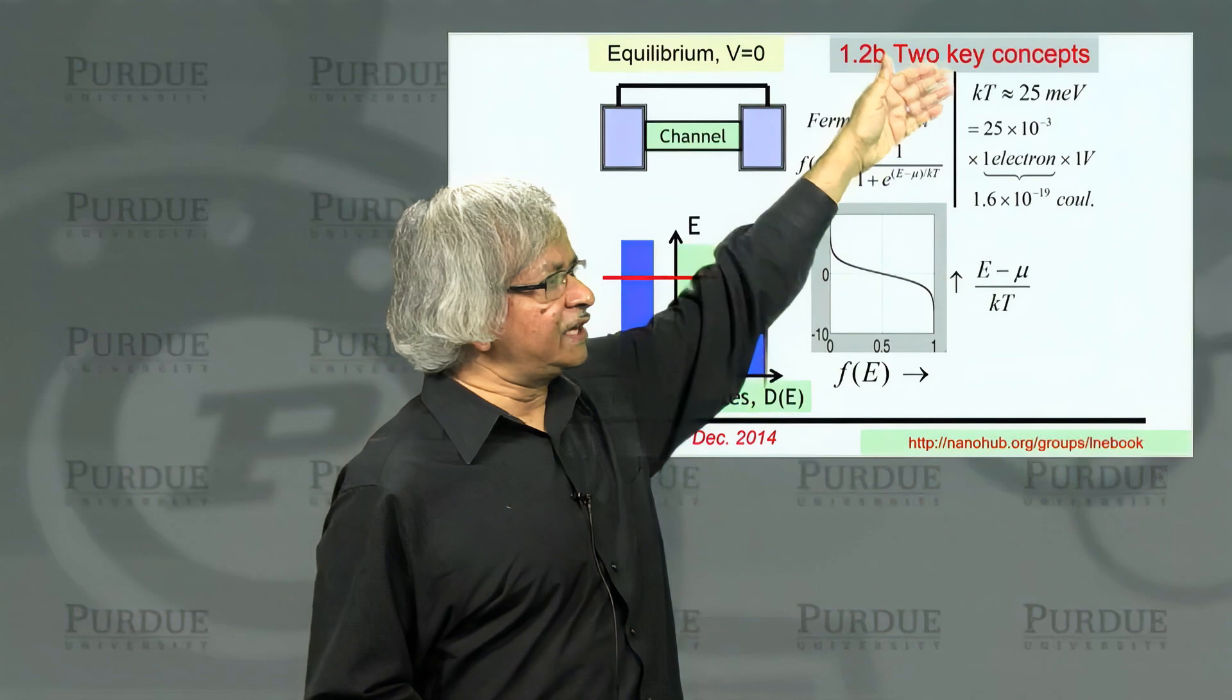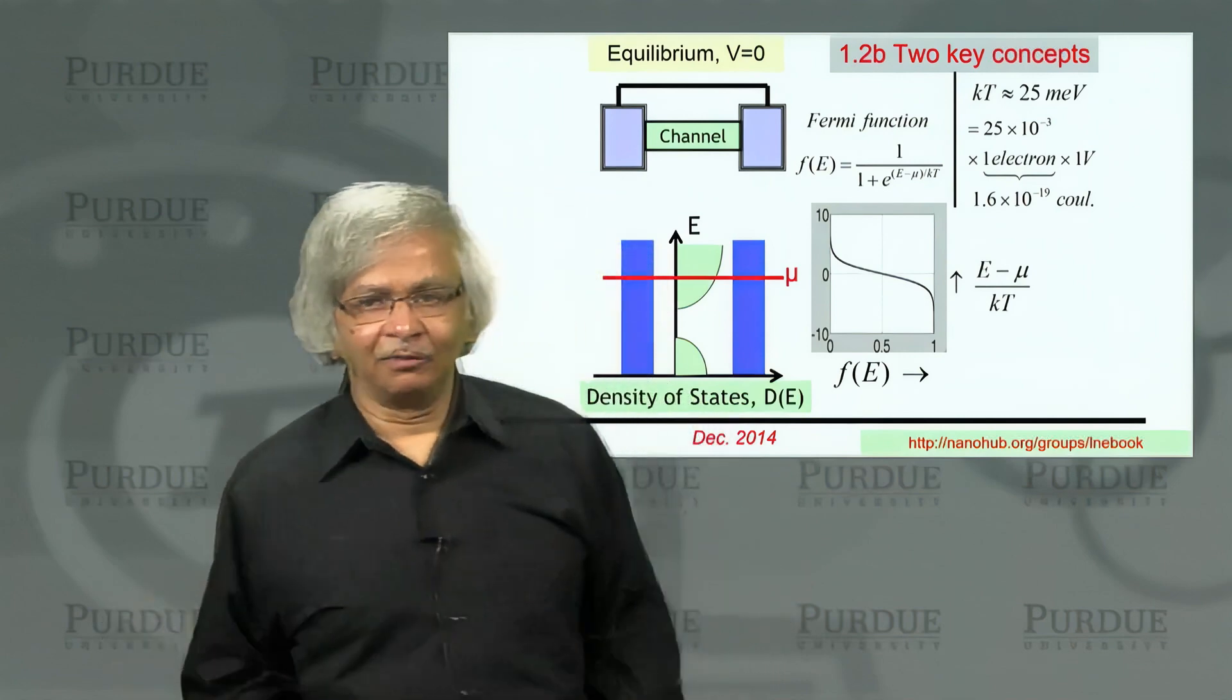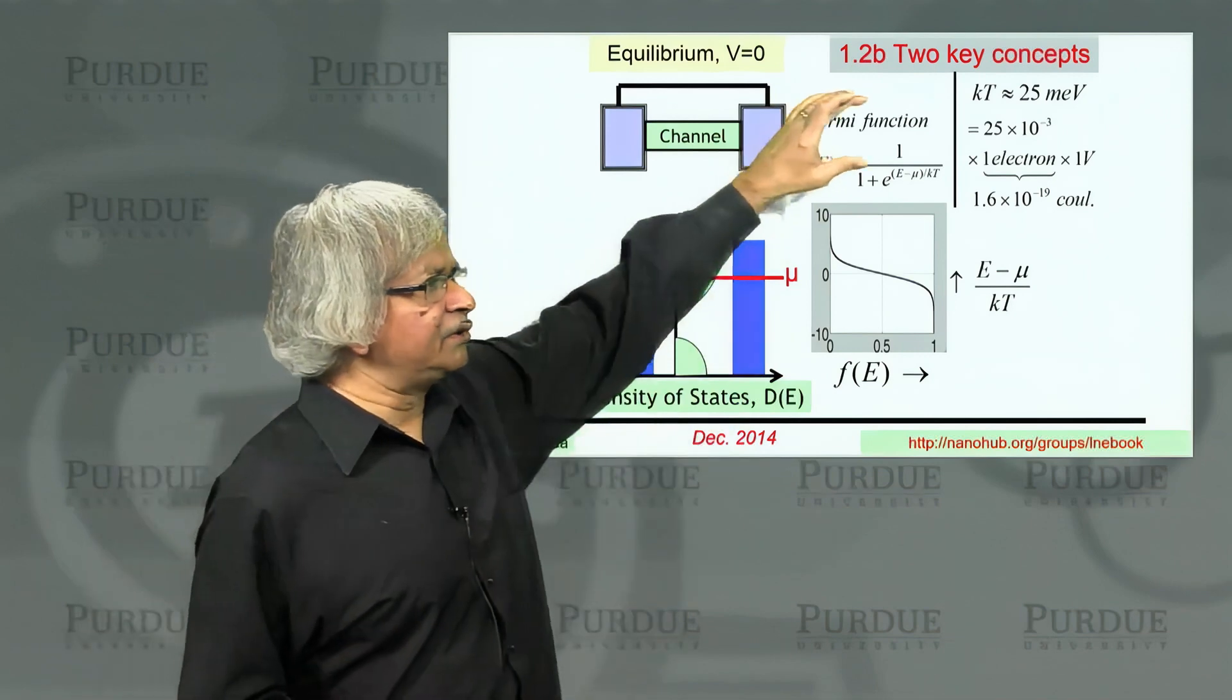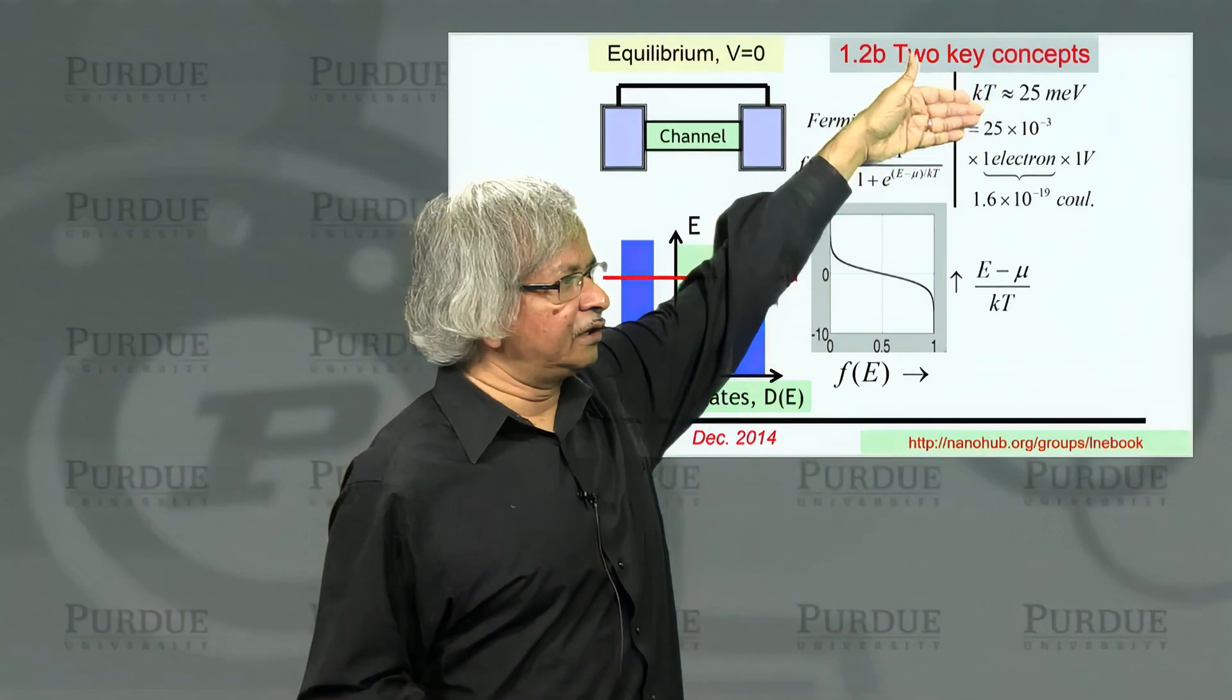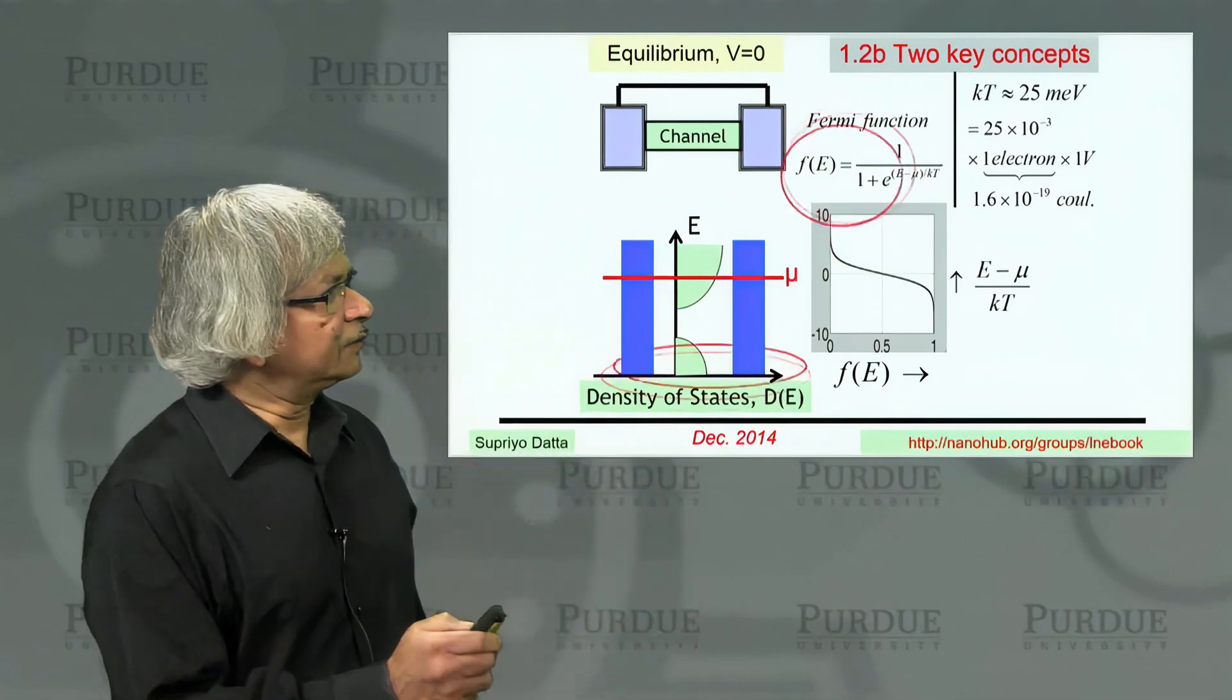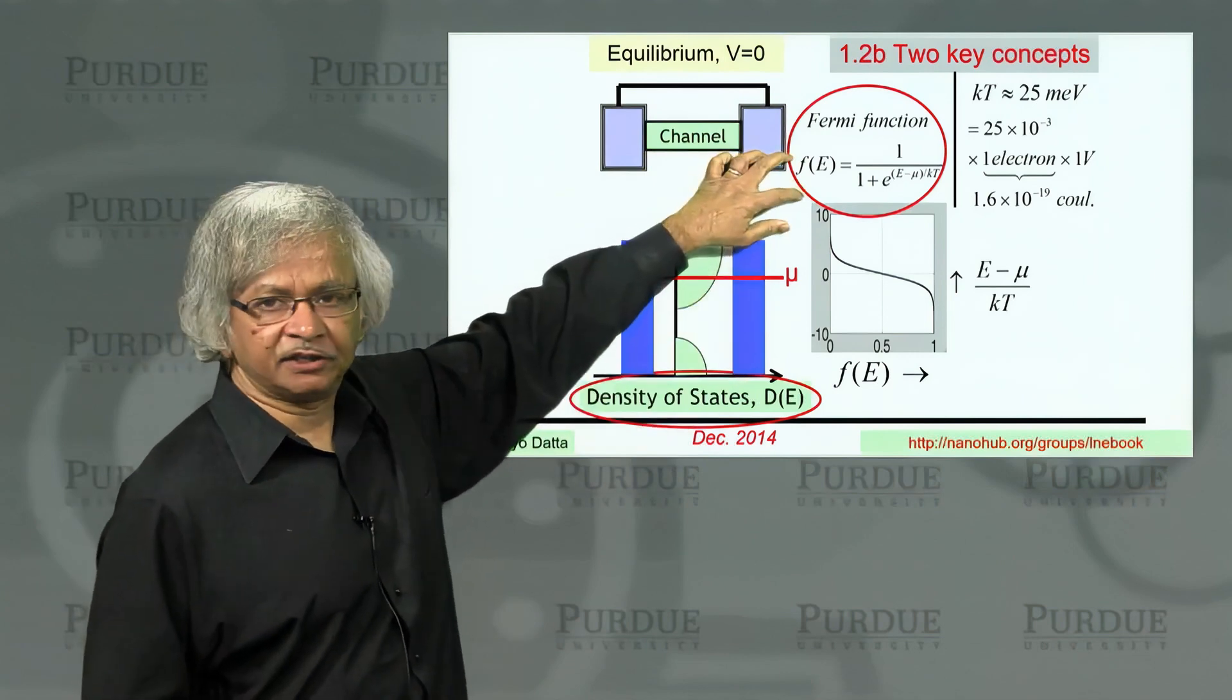If you wanted to write energies in joules, you'd usually always be carrying around this 10 to the minus 19th type of thing with joules. That's inconvenient. And so what's commonly done is, when you talk of energy, you talk in terms of electron volts. But you should be clear on how to handle the units and how to convert them. So we have introduced these two concepts, the density of states and the Fermi function.